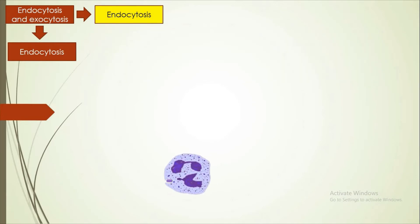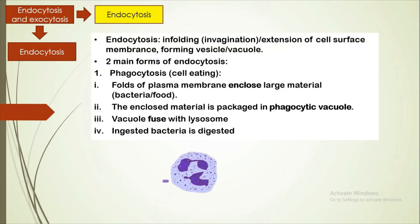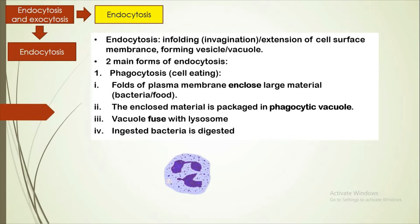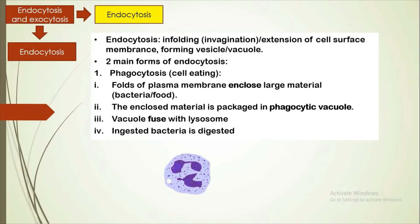First, we will take a look at endocytosis. Endocytosis can be divided into two types. The first one is phagocytosis. For phagocytosis, the folds of the plasma membrane will enclose a large material. The enclosed material is packaged in a phagocytic vesicle. The phagocytic vesicle will then fuse with a lysosome that contains digestive enzymes. Finally, the ingested bacteria will be digested within the vesicle.